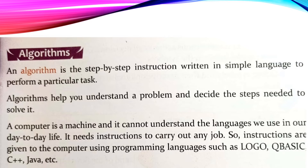Jo computer hai, chonkay yeh hamari language ko samajhta nahin hai jo hum apni language use karte hain. Us ko instructions chahiye hote hain koi bhi kaam karne ke liye. Computer ko instructions given to computer using programming language such as Logo, QBasic, C++, Java — yani computer ko hum ne us ki language mein jo woh understand karta hai, us language mein set of instructions dene hote hain. Yeh set of instructions dete hain takay jo action lena chahte hain, kaam nikalna chahte hain, woh acha tareeqay se ho jaye. Is se pehle kuch setup lene padte hain jaise pehla step hai algorithm.